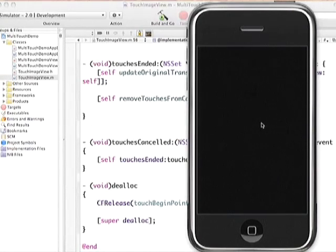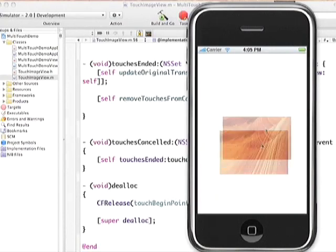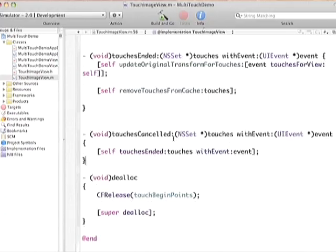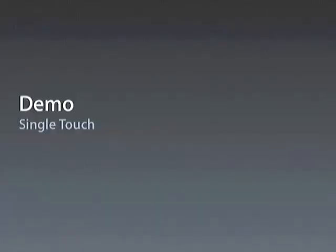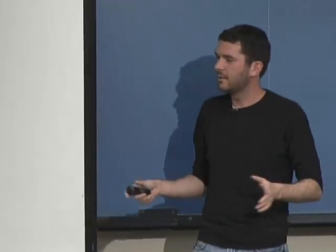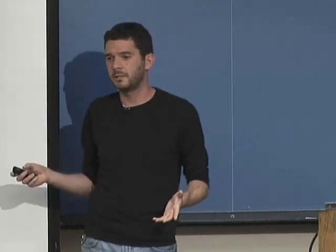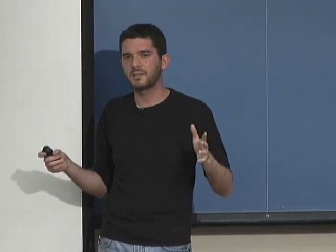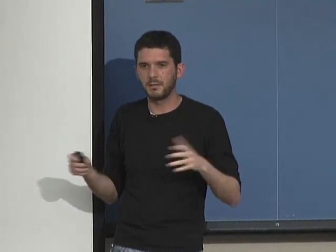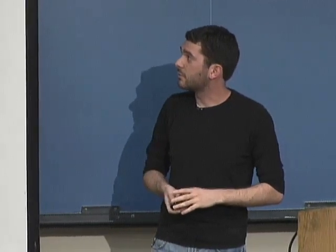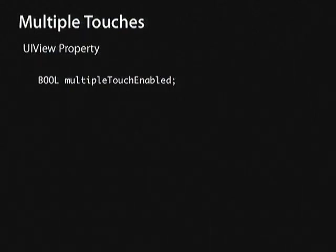Now let's talk about multiple touch, which is pretty similar to single touch with just a couple of additional things. By default, views are single touch only. If the user puts down two fingers in a view and you haven't set the multiple touch flag, one touch will be delivered and the other will just get lost — its view and window will be set to nil and it'll never be delivered to any view. The property you have to set is multiple touch enabled, and it only applies to a particular view.